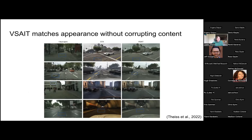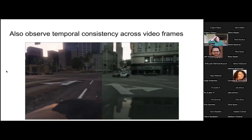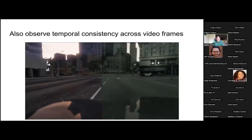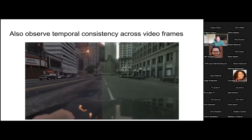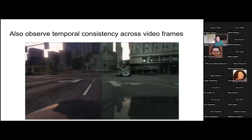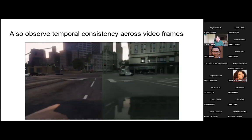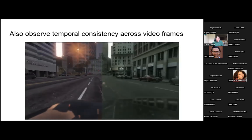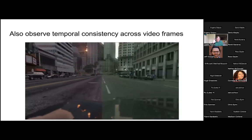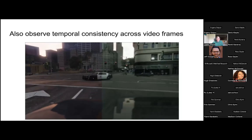A nice property that falls out of this approach is temporal consistency across video frames. Applying this to GTA5 video streams, we don't see any artifacts or drastic changes between translated frames, which is actually a problem with many other image-to-image translation approaches that show very large differences even for similar consecutive frames.